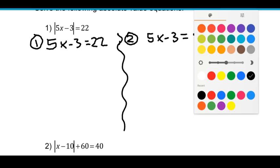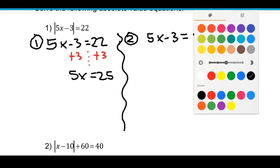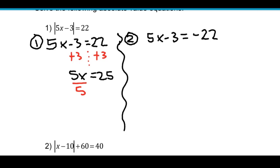For case 1, let's isolate x. I'm going to start by moving the 3 by adding it to both sides. Then we have 5x equals 25, and if you divide both sides by 5, we get that x is 5.